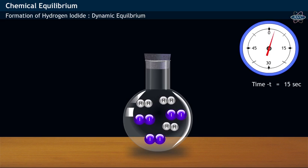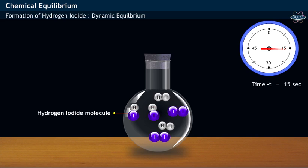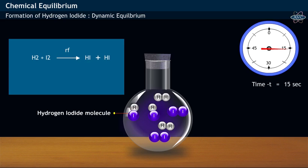After passage of 15 seconds of time, few Hydrogen molecules collide with Iodine molecules and form Hydrogen Iodide molecules. The reaction is represented as shown. Here, RF refers to the rate of forward reaction.